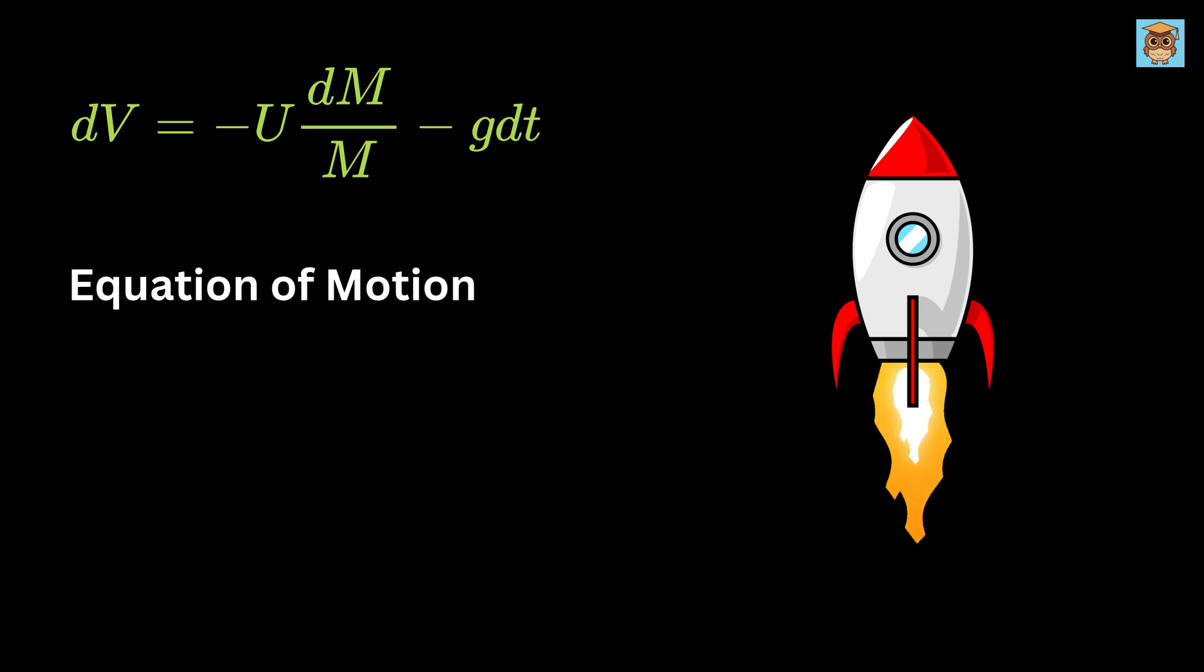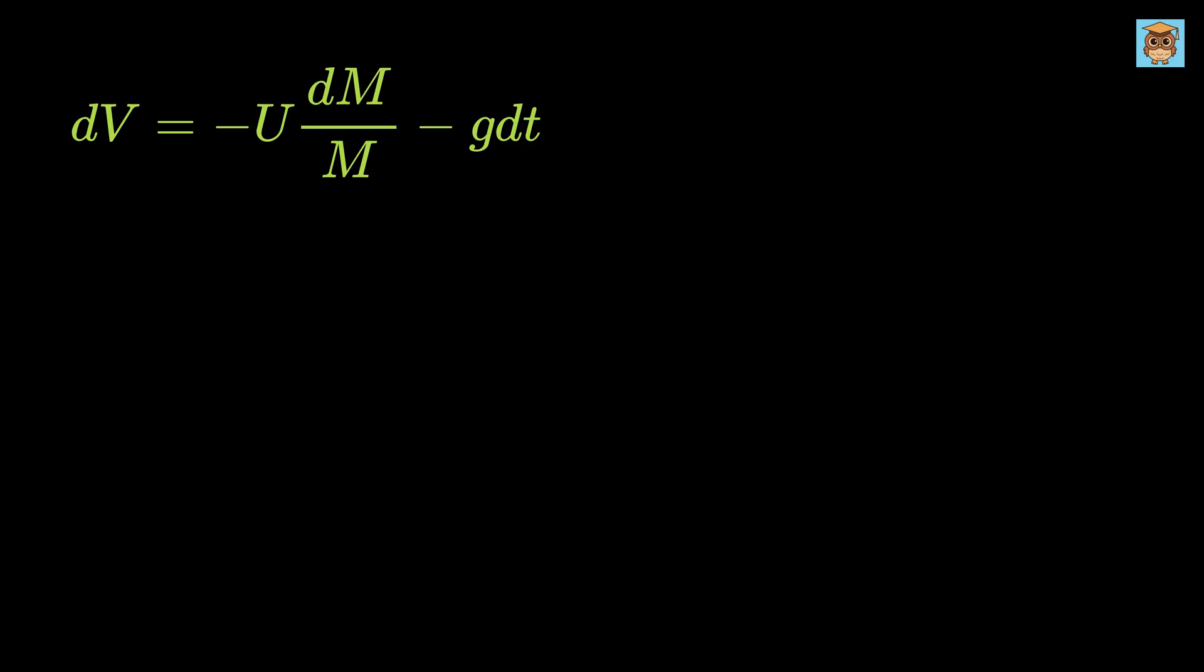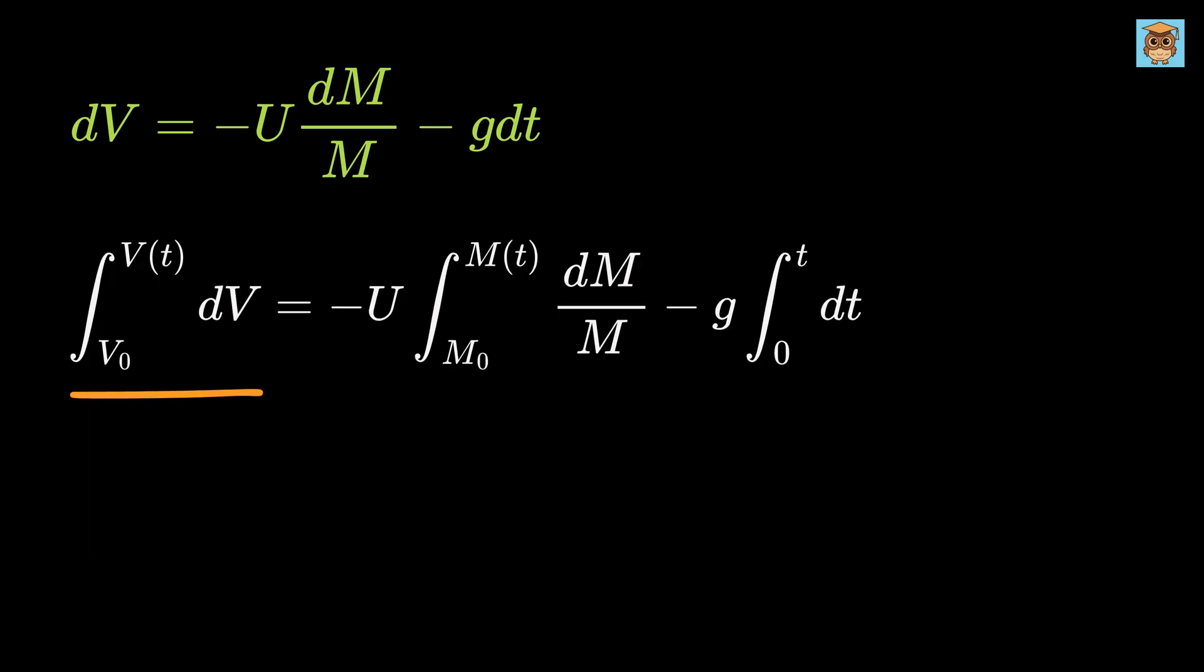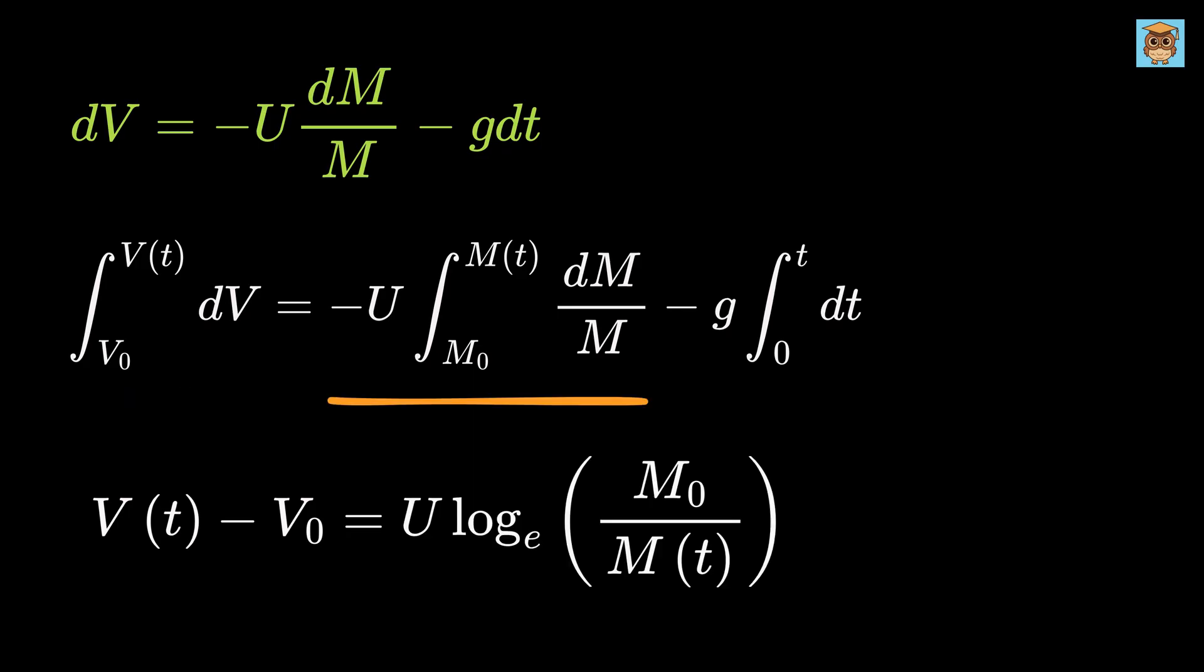Now we will use integration to solve for v. We will integrate dv from initial velocity v0 to a velocity at time t or v(t), then integrate m from initial mass M0 to a mass at time t or M(t), and integrate time from 0 to t. Since this video is about the application of calculus in real life, I will not be showing how to integrate, but if you are interested to know more about it, I have already made two videos on the same and the link is in the description. This will simply give v(t) minus v0 equals u times natural log of M0 over M(t) minus g times t.